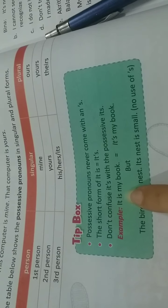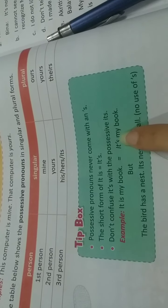Or you can write it's my book. Just now we learned that the short form of it is, is it's. So, in place of it is, you can write it's also and both sentences mean one and the same thing.